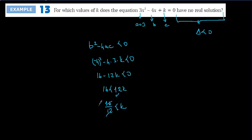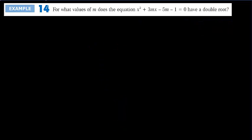Simplifying 16 over 12 by dividing by 4 gives 4 over 3. So the result is 4 over 3 less than k. If you choose k greater than 4 over 3, the equation has no real solution. If you choose k bigger than 4 over 3, you will have two different roots. And if you choose k equal to 4 over 3, you will have a double root.